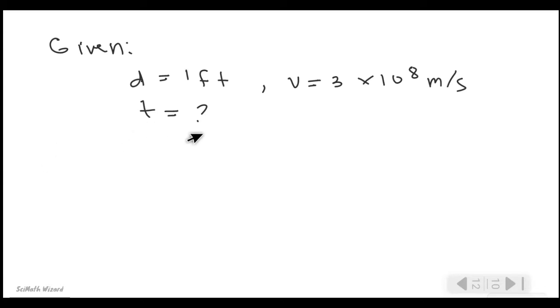So the formula must be: time is equal to the distance over the speed of light. So in here we should substitute the value from the given.